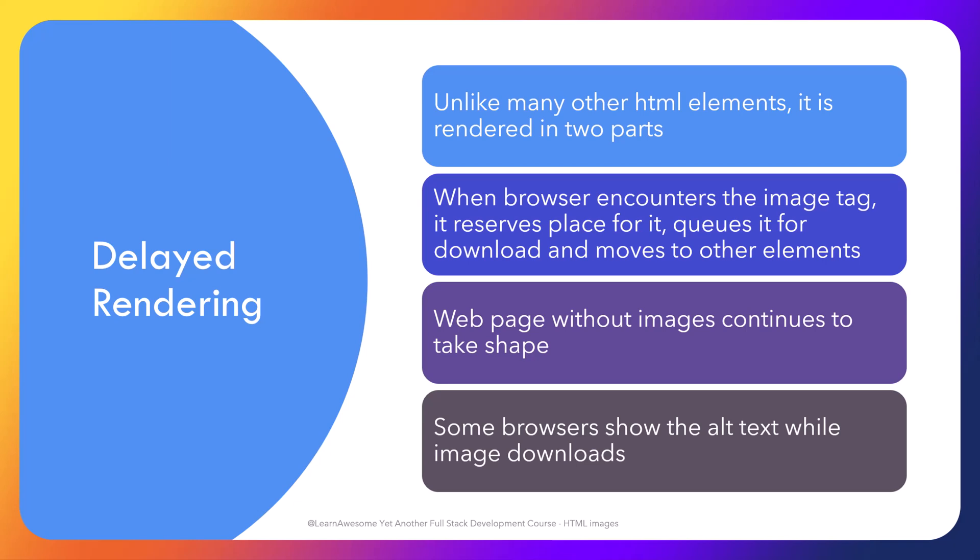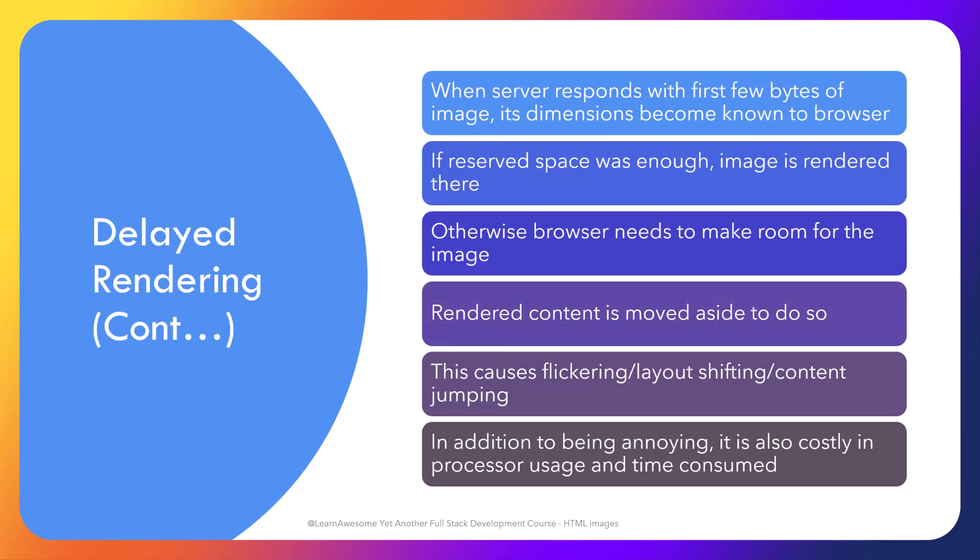While the image downloads, text-based elements — those with complete information — continue to be rendered on the screen, and the user experiences a web page taking shape even without images. Depending on the browser, an image reservation box with the alt tag is shown so the user expects an image to show up, or just the alt tag, or nothing. When the server responds, the first bytes of image content generally contain its size in terms of height and width.